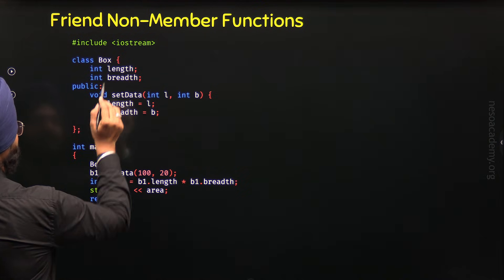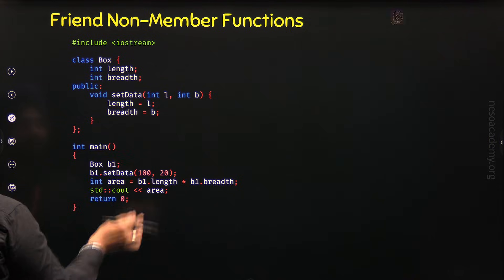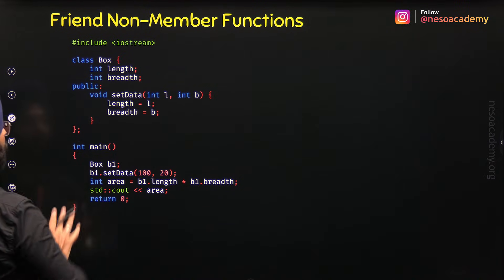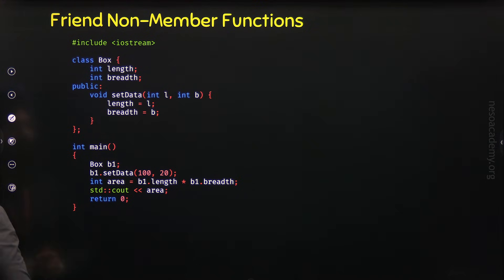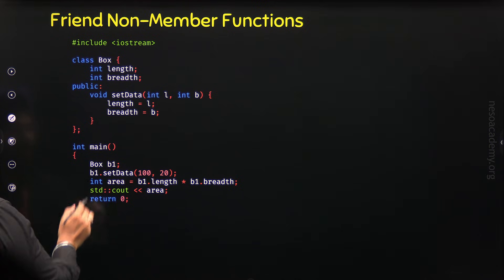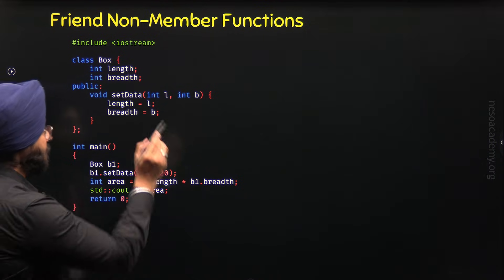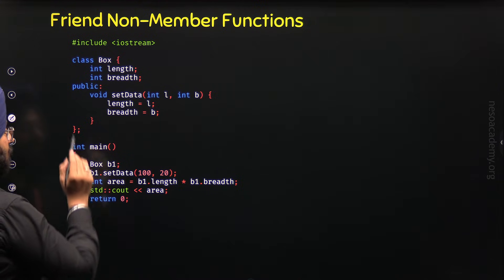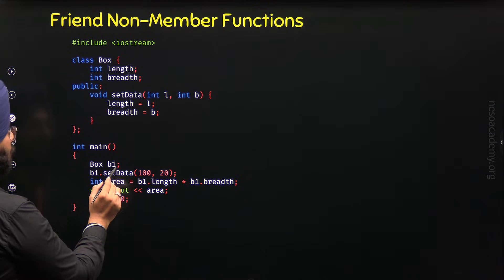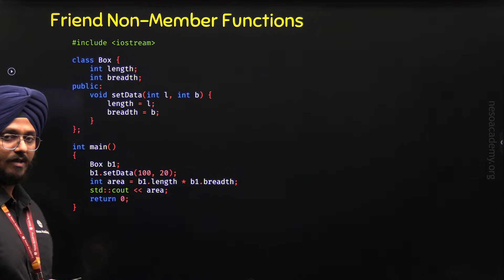Let's say we have a class box with private members length and breadth. We also have a public member function setData that allows us to set length and breadth of a box using parameters L and B. Inside main, I have defined the object b1 of class box. Through this object, I am calling setData and setting length to 100 and breadth to 20.